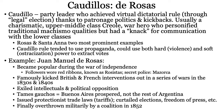De Rosas also had his own secret police. He came to power because the French and British tried to intervene in Argentina — the British have always had a thing with Argentina, especially the Malvinas or Falkland Islands. De Rosas was the general who kicked them out, then came into politics. His followers grew, and he was legally able to become president. After that, his followers became more violent, he set up secret police and exiled intellectuals.